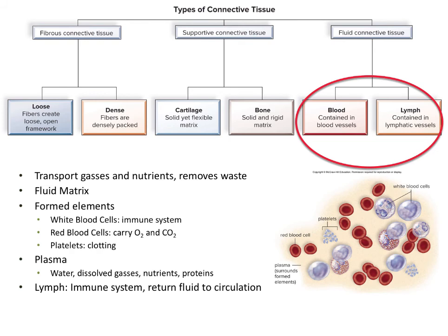Our last type of connective tissue is fluid — these have a completely fluid matrix. Bone has a very rigid and solid matrix, but blood and lymph have liquid matrices. The job of blood is to transport gases and nutrients as well as to remove waste. Inside blood we have formed elements: white blood cells, which make up our immune system and protect us; red blood cells, which carry gases — specifically oxygen; and platelets, which are important in clotting in case of bleeding. The plasma is the liquid part of the blood — this is the matrix — and it contains water, dissolved gases, various nutrients, and proteins.